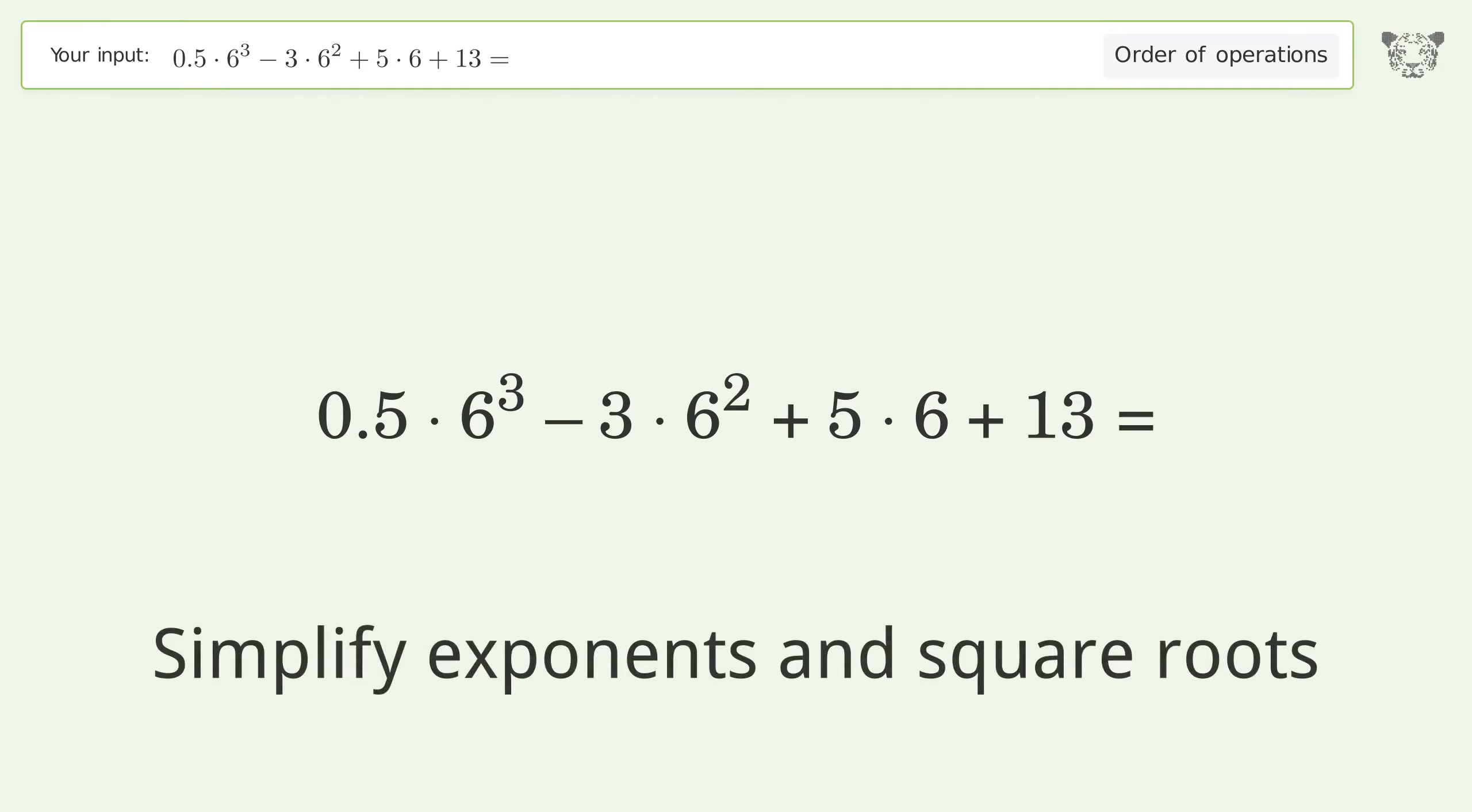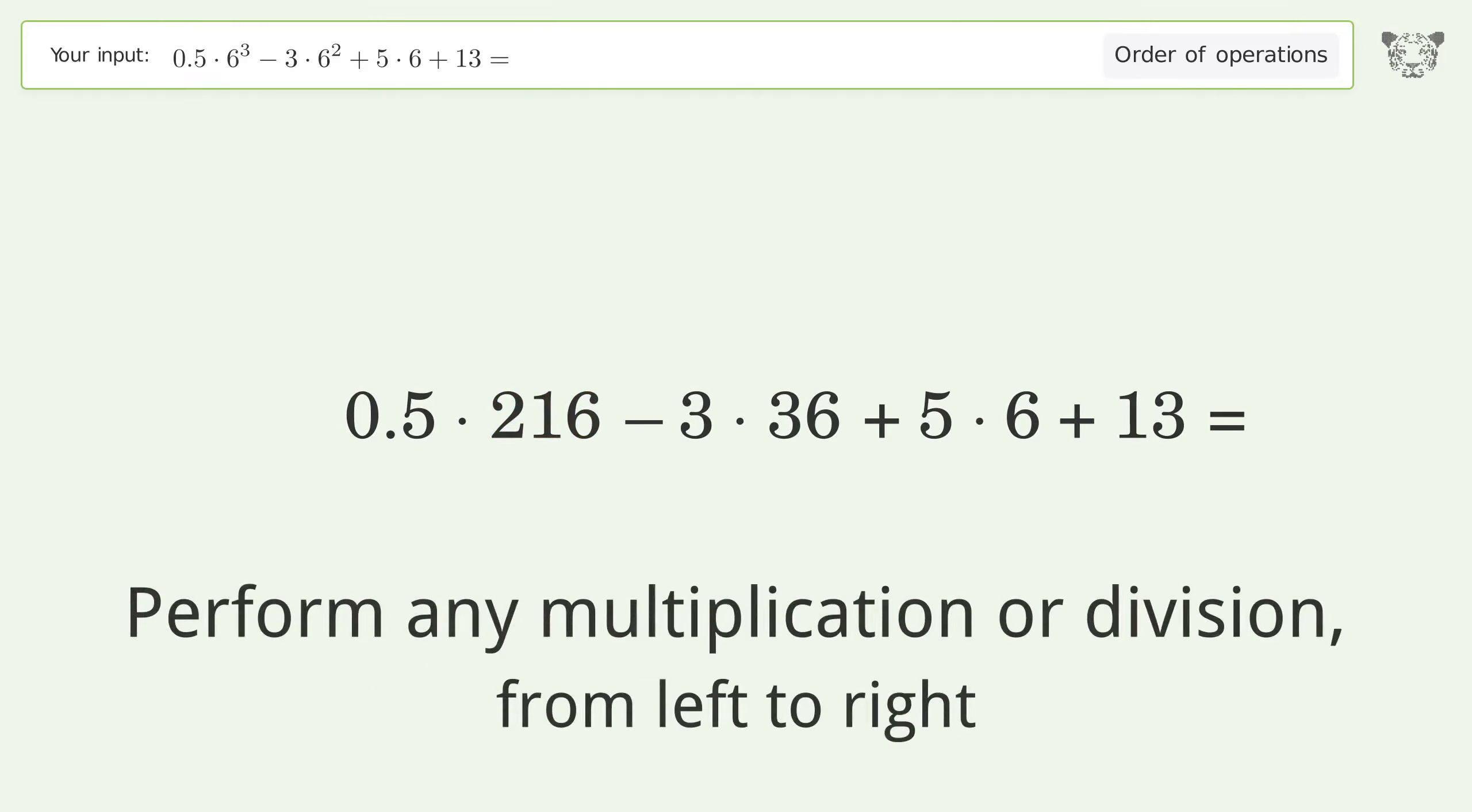Simplify exponents and square roots. 6 to the power of 2 equals 36. 6 to the power of 3 equals 216. Perform any multiplication or division from left to right.